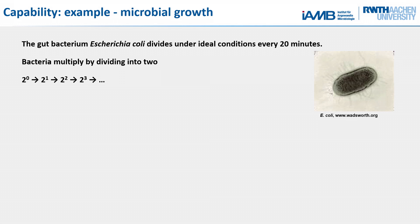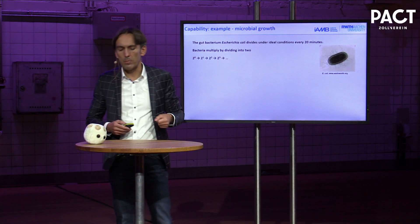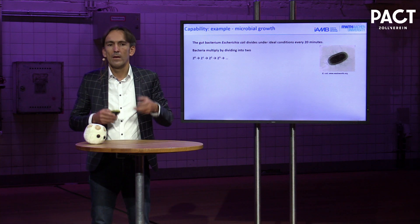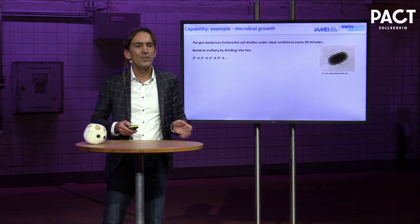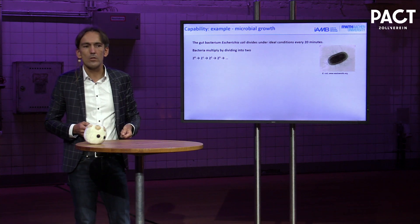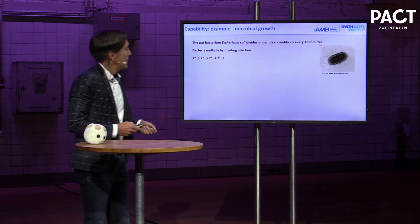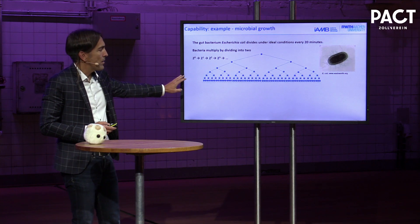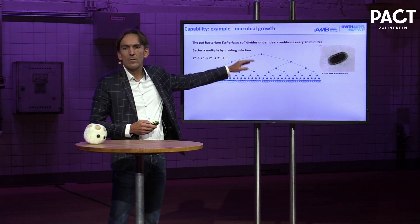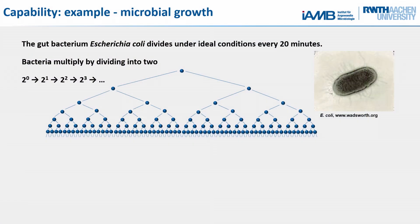If you take one of these microbes — maybe the most famous — it's a gut microbe of humans called Escherichia coli. It's the workhorse of biotechnology. It can double every 20 minutes. Some microbes can double every 10 minutes. We are now all experts in exponential growth due to Corona. If you just have a look at what a microbe is doing: this is two hours of growth — 64 cells from one cell, six generations.